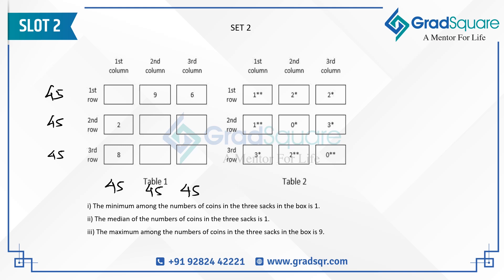Starting with the first box in the third row: it has three sacks with more than five coins and a median of eight. Since the median is eight, the minimum-is-one and median-is-one conditions are ruled out, so the satisfied condition must be maximum equals nine. With nine and eight confirmed, the third sack must also be more than five. The only value giving a multiple-of-three total is seven, giving a total of 24 and an average of eight.